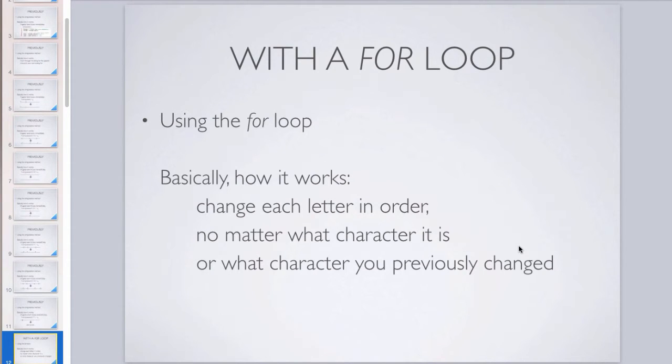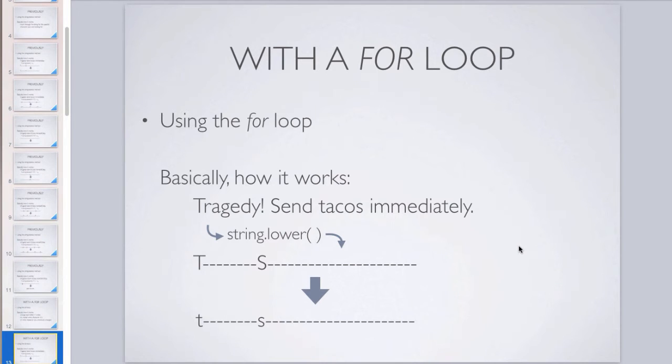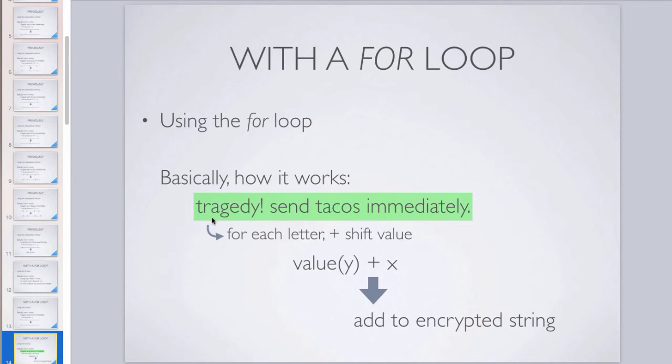Now for the loop method, instead of hunting through that string for a specific letter over and over again, this is going to change one letter at a time. It's going to change the very first letter, then the second letter, then the third, and so on. It's not going to look for a certain letter. It's just going to change it no matter what the current letter is. Once again, just for simplicity, we're going to convert to lower. We don't have to in this method, but it will make the program shorter. Now that the whole thing is lower, it's going to go through for each letter of the string, add the shift value to it, and then add that to a variable that we're going to call encrypted string or encrypted message.